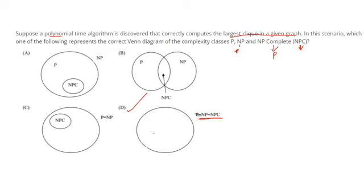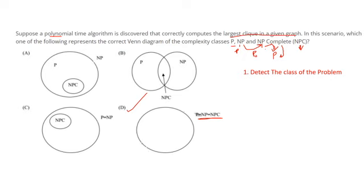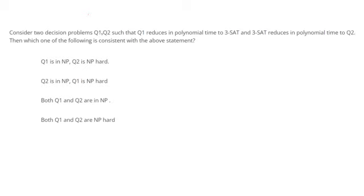If you don't remember that theorem, you can solve it logically. Since any NP-complete problem is polynomial-time reducible to another NP-complete problem, and this clique problem is solvable in polynomial time, then via polynomial-time reduction and polynomial-time solving, any NP-complete problem can ultimately be solved in polynomial time. So we can say P equals NP equals NP-complete. The approach is: first detect the class of the problem, then apply the rules accordingly.